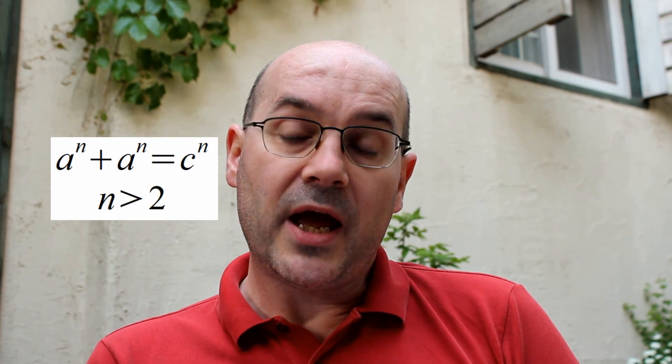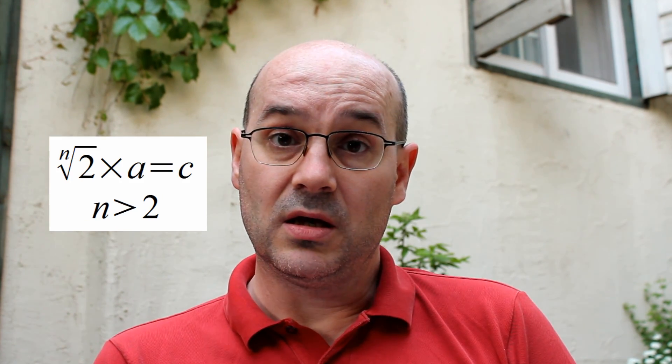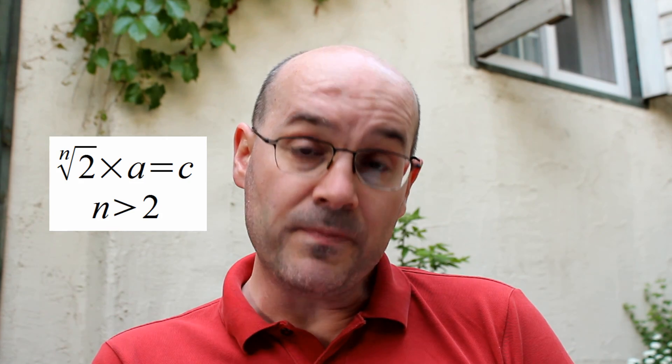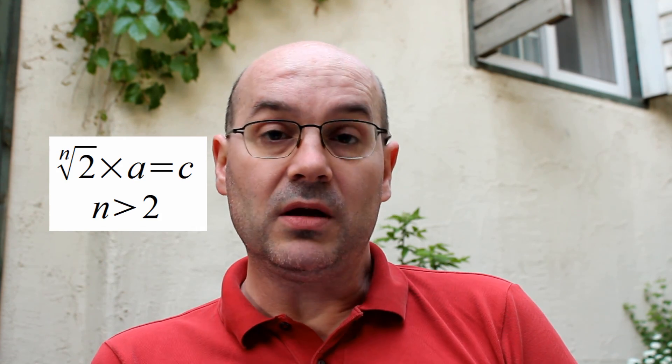What if those two numbers are the same? Well, if those two numbers are the same, we get this equation: a to the power of n plus a to the power of n equals c to the power of n, with a and c being positive integers — even. So we get 2a^n = c^n, and that means the nth root of 2 times a is c, which is impossible because a is an integer, the nth root of 2 is irrational, so c cannot be an integer.